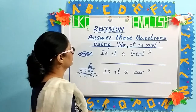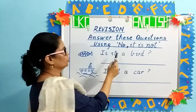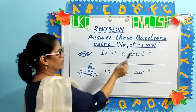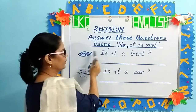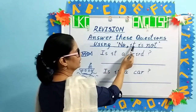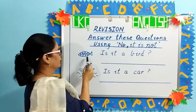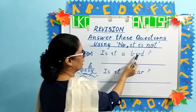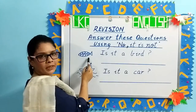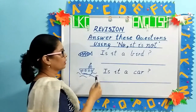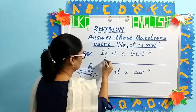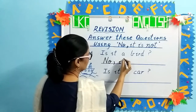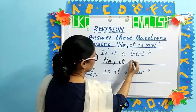Children, the next exercise is: you will answer the question using 'no, it is not.' Look at the picture and look at the word at the end. If it is not the same, you will write 'no, it is not.' The first one is the picture of a fish. Is it a bird? B-I-R-D, bird. Is this picture a bird, children? No — it is a fish. So your answer will be: no, comma, it is not.